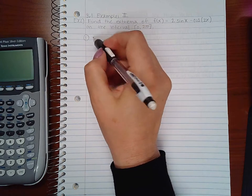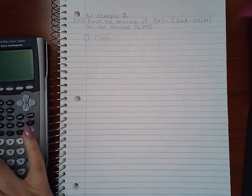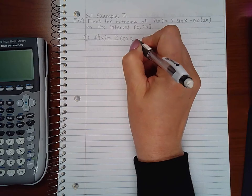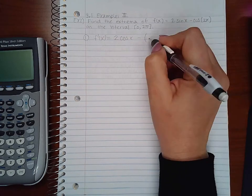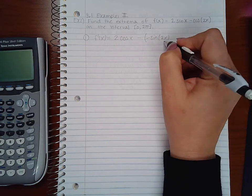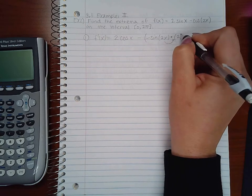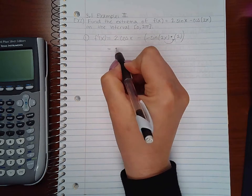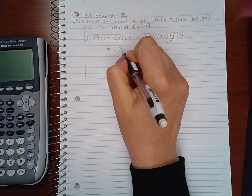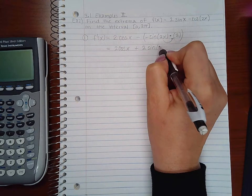So let's go ahead and do part 1 which is to find the derivative so that we can get the critical numbers. 2 is my constant multiplier and the derivative of sine is cosine minus the derivative of cosine is negative sine and I keep my angle the same but because my angle is not just an x I do have to multiply by the derivative of that angle which would be 2. If I clean this up just a little bit I will get a positive 2sine(2x).